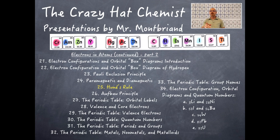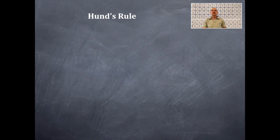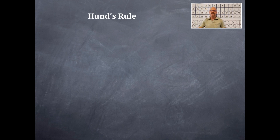Welcome to the Crazy Hack Chemist. Today we're doing the 25th video in electrons and atoms. We're going to be talking about Hund's rule. I need you to pull out a periodic table and we're going to be looking at the first ten elements, doing the electron configuration and orbital box diagram of each to apply Hund's rule.